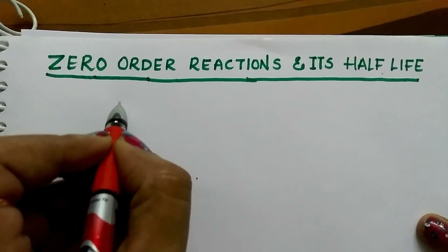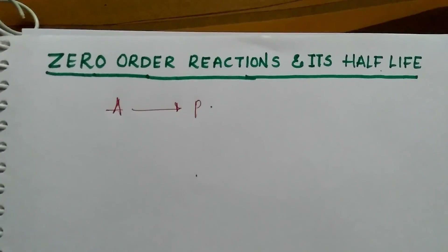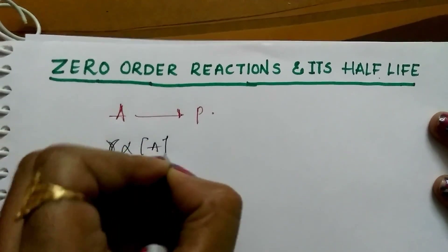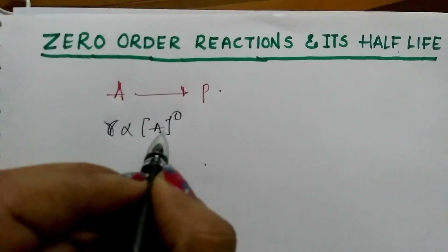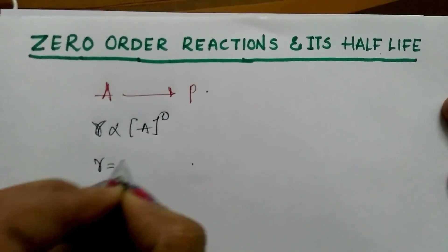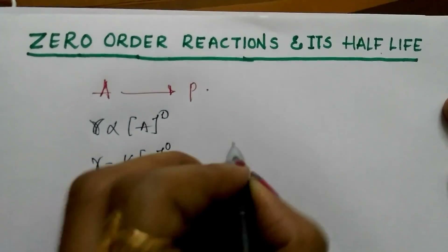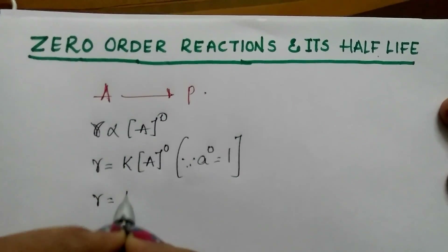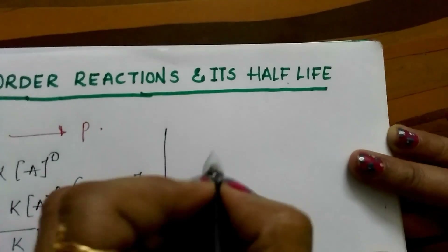Suppose we have a reaction where reactant A gets converted into product. Then, rate is proportional to the concentration of A to the power of zero, because the rate is proportional to the zeroth power of the concentration. Replacing the proportionality with rate constant K, we get rate = K × [A]⁰ = K × 1 = K.